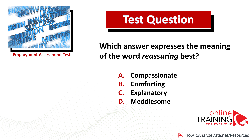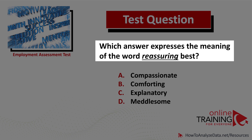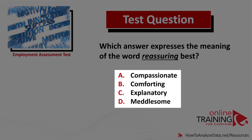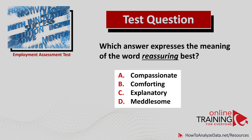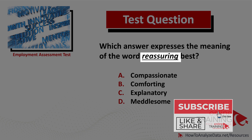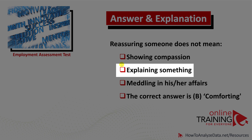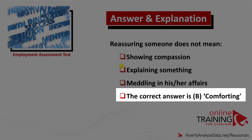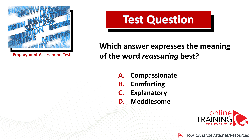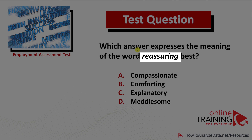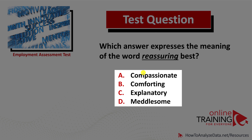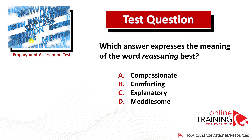A lot of times you might get a question testing your knowledge of English word meanings. Which answer expresses the meaning of the word 'reassuring' best? Choices: compassionate, comforting, explanatory, and meddlesome. To answer correctly, understand that reassure typically means removing doubts or fears for someone. Reassuring does not mean showing compassion, explaining something, or meddling in affairs. The correct answer is choice B, comforting, which closely matches the meaning of reassure.